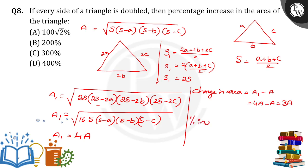Percentage increase is equal to change in area divided by A times 100, so 3A divided by A times 100. A cancels, 3 into 100, we will get 300 percent.